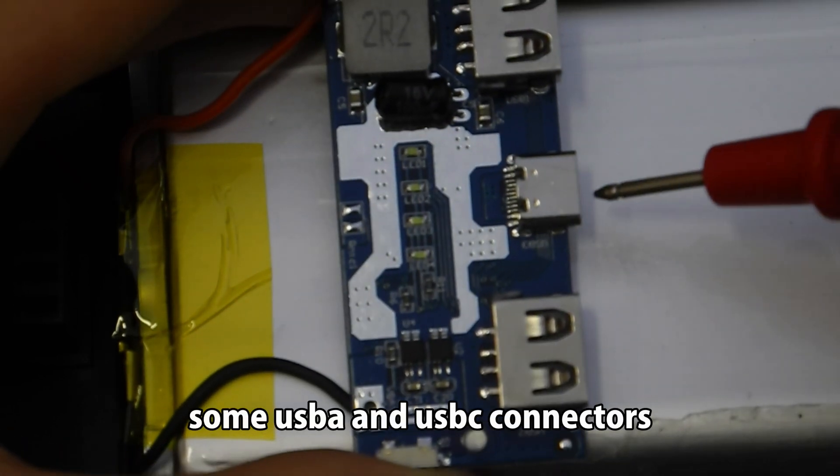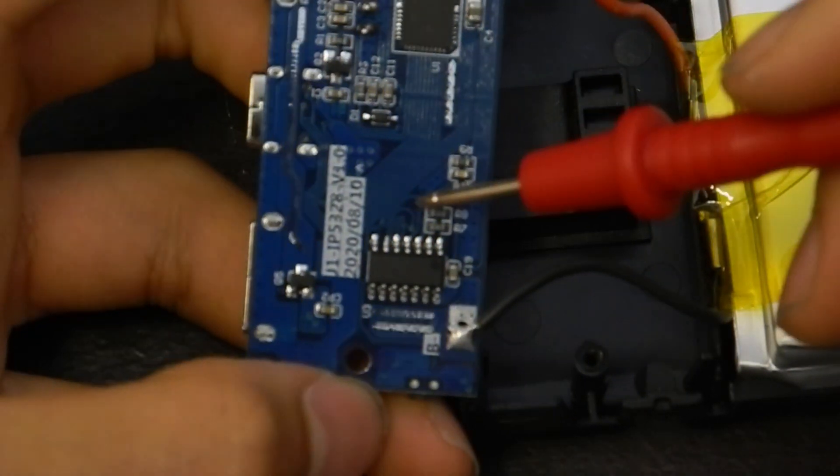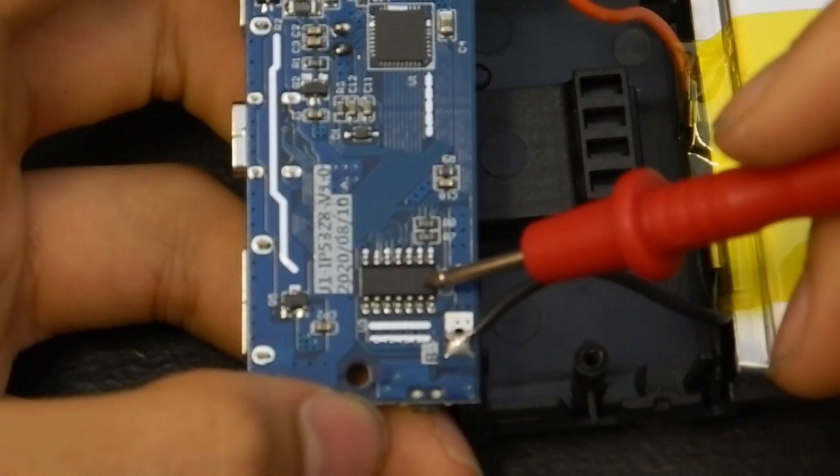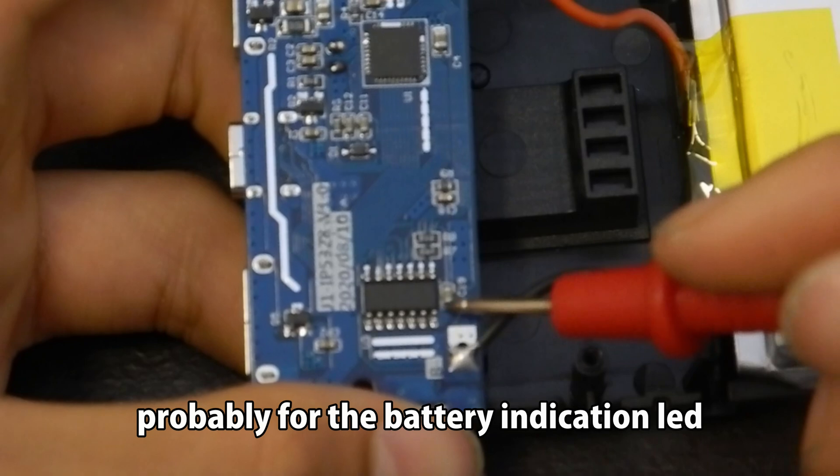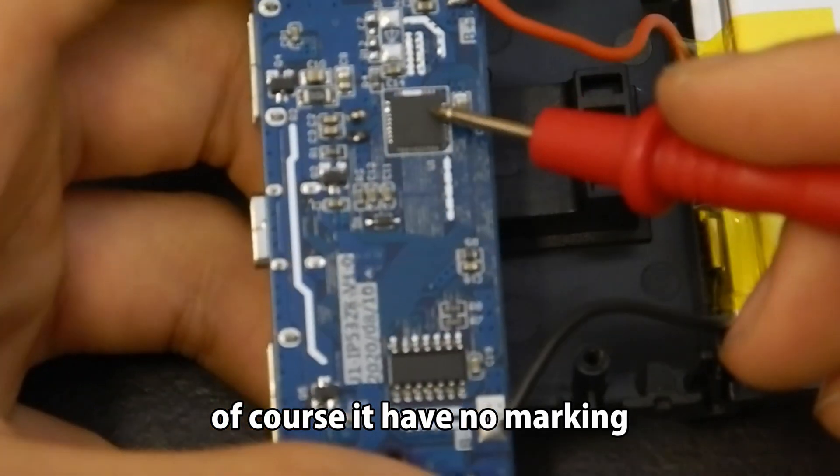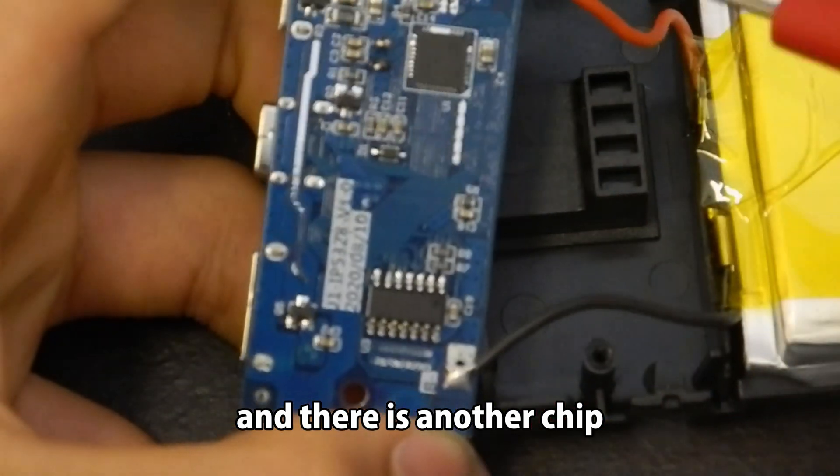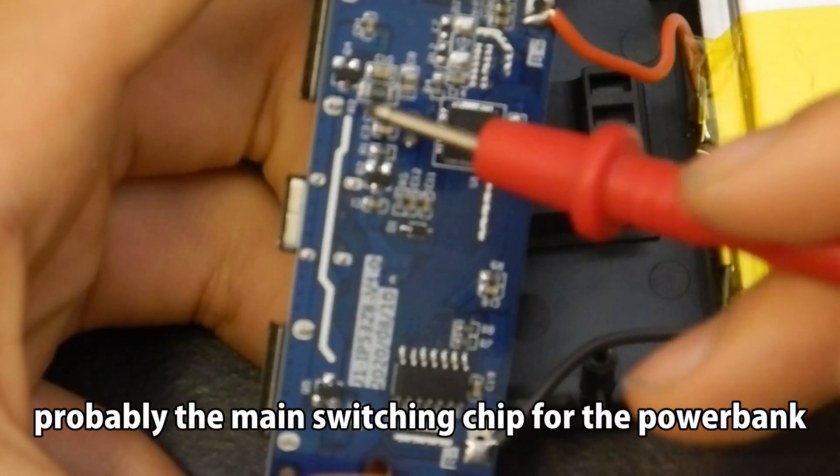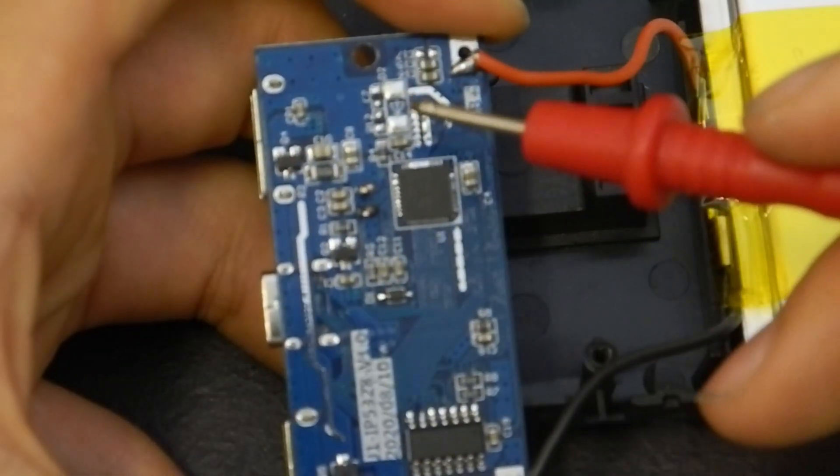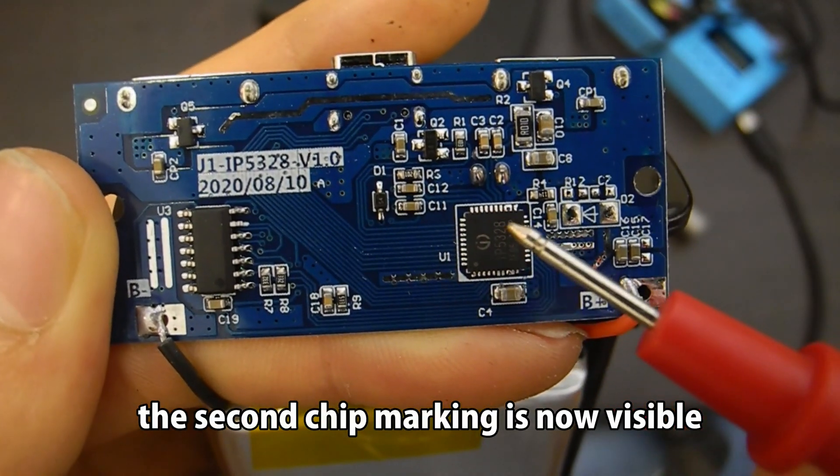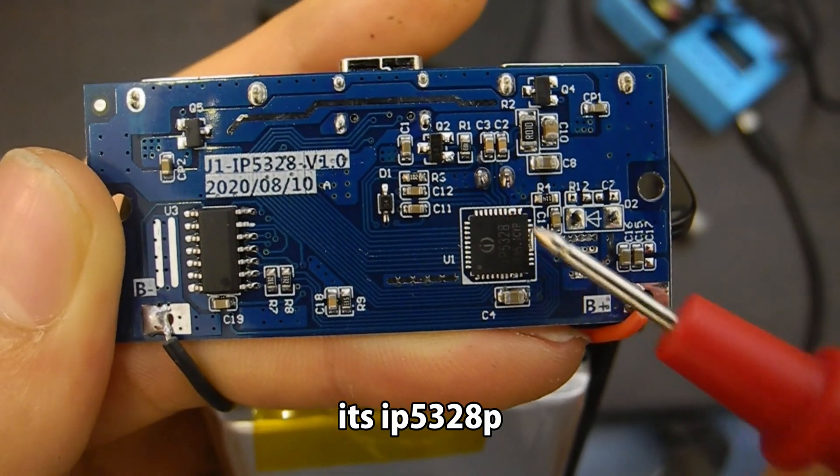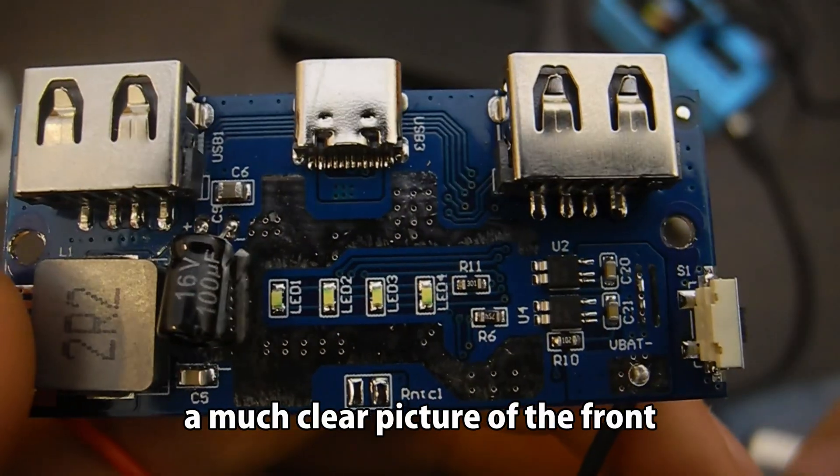Some USB connectors and the microcontroller, probably for the battery indication LED. Of course it has no marking. And there is another chip, probably the main switching chip for the power bank. After 10 minutes of trying I finally got the camera to focus. The second chip marking is now visible. It's IP5328P. A much clearer picture of the front.